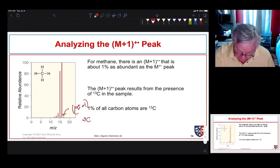Most methane has C12, but 1% of methane will have C13. So we expect then that this peak to be 1% the size of the base peak for methane because 1% of the molecules will be due to carbon-13.